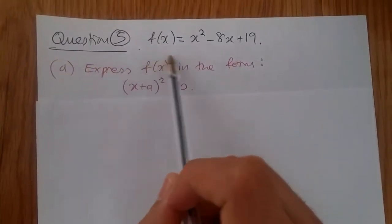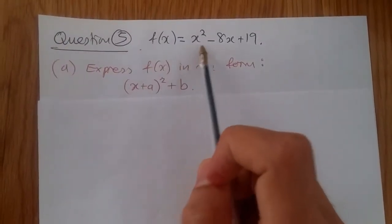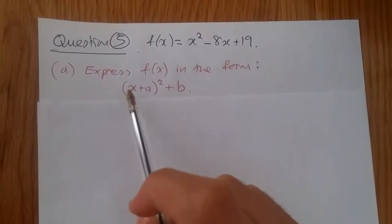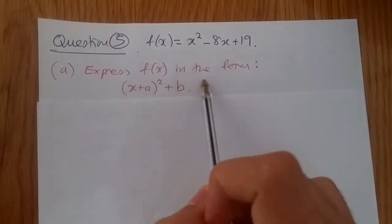Question 5. So here we're given a function that's given by x squared minus 8x plus 19. And now they want us to express this into this form.